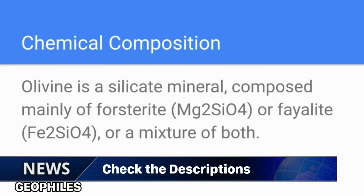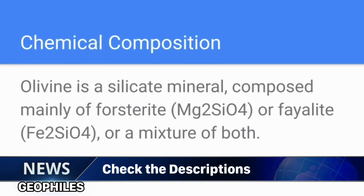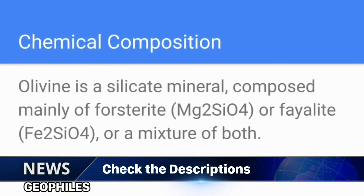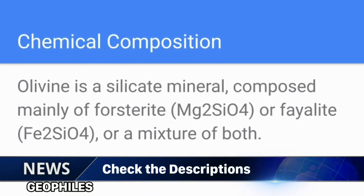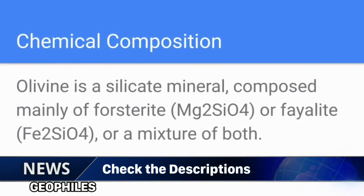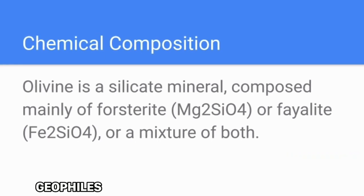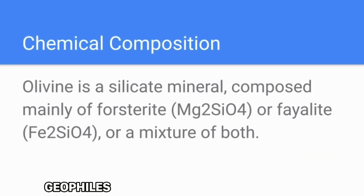Chemical Composition: Olivine is a silicate mineral composed mainly of forsterite (Mg2CO4), fayalite (Fe2CO4), or a mixture of both.